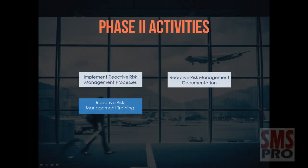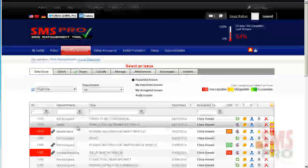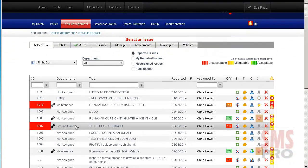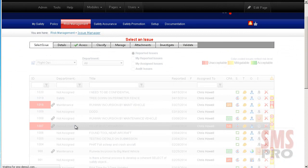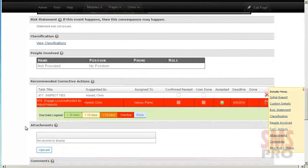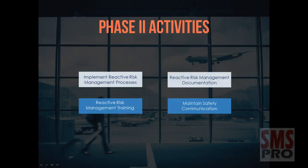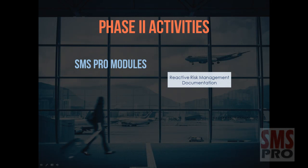Maintaining documentation relevant to reactive risk management is achieved through SMS Pro's Issue Manager module, which documents all risk management activities in your SMS. Throughout an issue's lifecycle, all management activities are documented by SMS Pro and can be reviewed in the Issue Details tab, including a history of all user-added and system-added comments. The modules identified in Phase 1 continue to provide the means for safety communication.